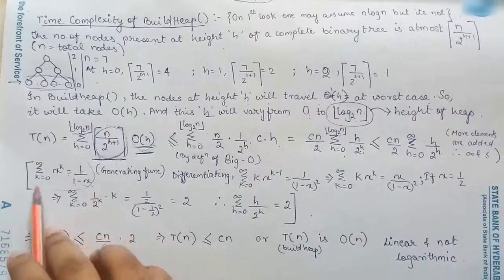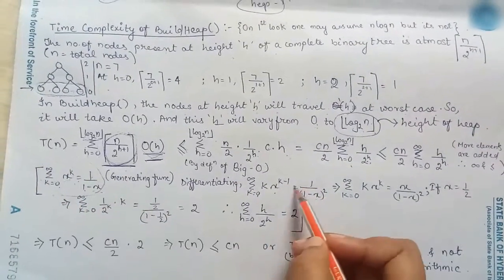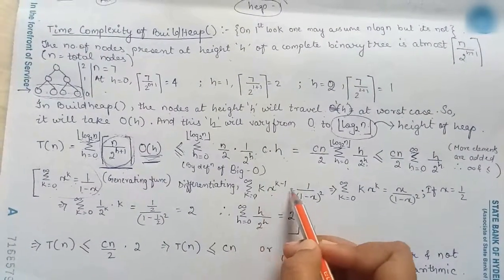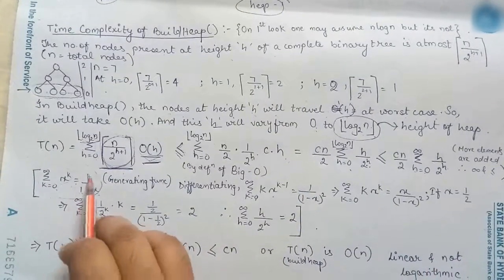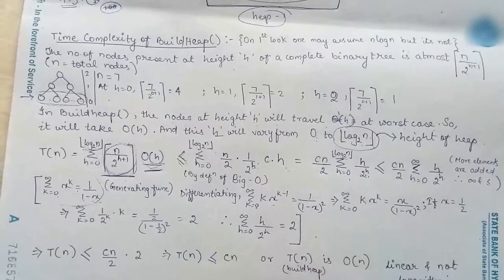And by differentiating this thing and by differentiating this thing we will get here summation remains same this term on differentiating is k x to the power k minus 1 and this side upon differentiating is 1 by 1 minus x whole square.